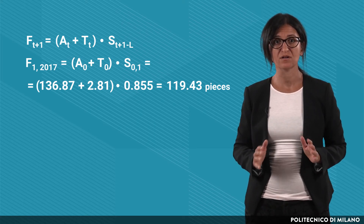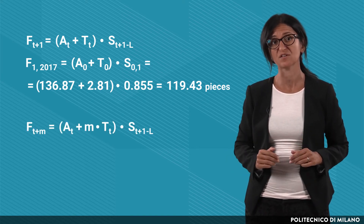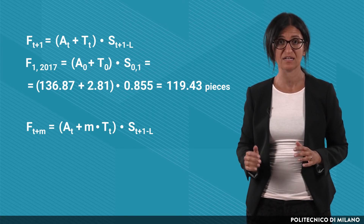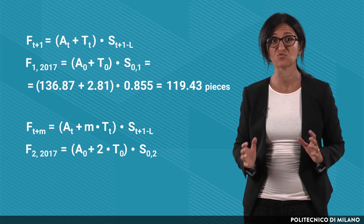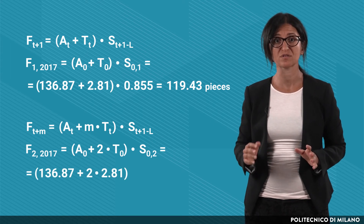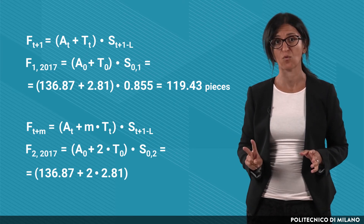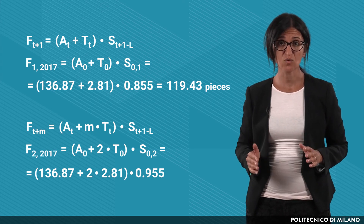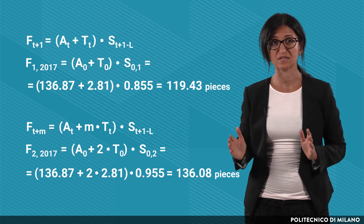At the end of December 2016, we can also be interested in forecasting the demand in other quarters. For example, if we want to forecast the demand in the second quarter of 2017, we have to properly consider the trend and the seasonality factor. More specifically, we have to consider two times the trend — one for the first quarter and another one for the second quarter — and the seasonality factor of the second quarter. If we do so, we obtain around 136.08 pieces.